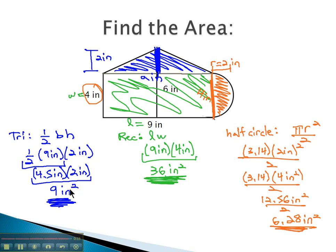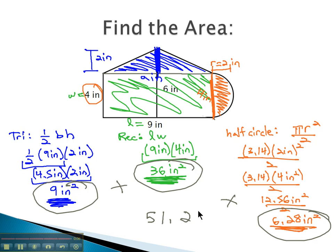To find the total area, we'll add these together. 9 plus 36 plus 6.28 is 51.28 square inches.